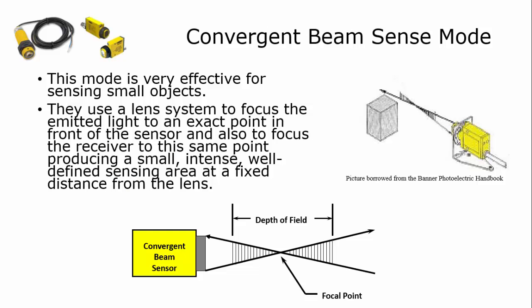The convergent beam sense mode is very effective when you need to sense small objects. They use lenses that focus the emitted light to an exact point in front of the sensor and also focus the receiver to this same point, producing a small, intense, well-defined sense area at a fixed distance from the lens.